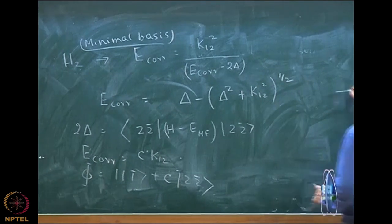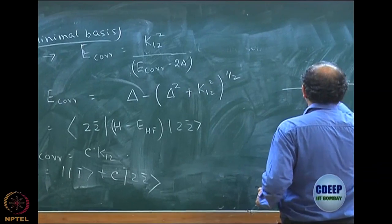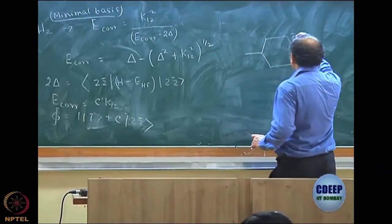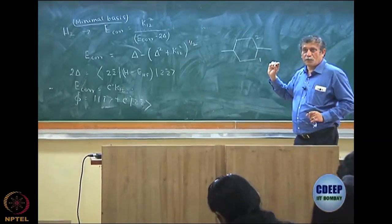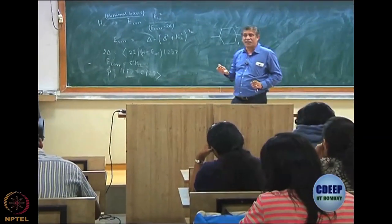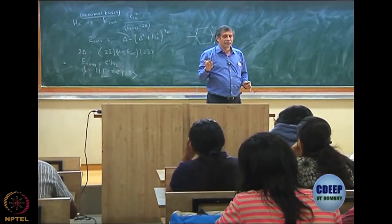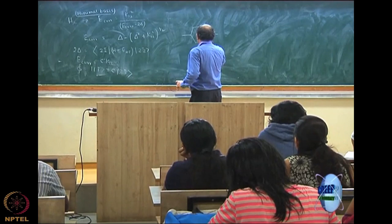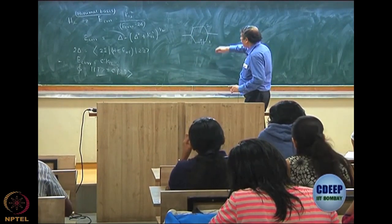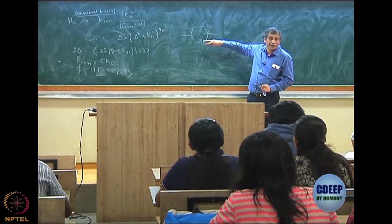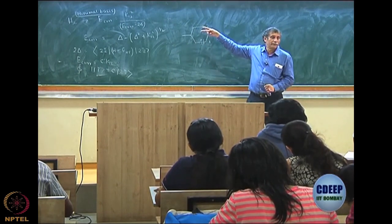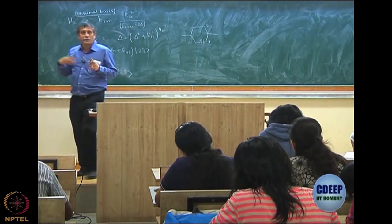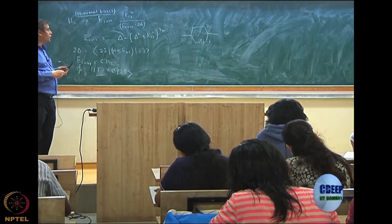You have 2 atomic orbitals. You do a Hartree-Fock and get 2 molecular orbitals. Orbital 1 is the bonding molecular orbital sigma g and 2 is the anti-bonding sigma u. So your Hartree-Fock is |11 bar> and your DCI determinant will be |22 bar>. So it is a very simple problem — beyond Hartree-Fock when you do DCI.